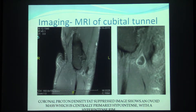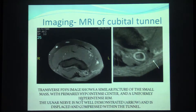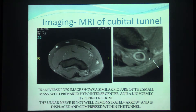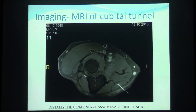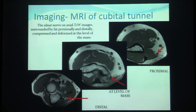On the MRI, we see the mass in the cubital tunnel. We see a hyperintense signal with a round hyperintense ring around it. Here on another sequence, we see the mass and don't clearly see the ulnar nerve at the level of the mass, but proximally we can see it more clearly, resuming its normal structure. In different views, we see the mass, the ulnar nerve at the level of the mass, and also the ulnar nerve proximally.